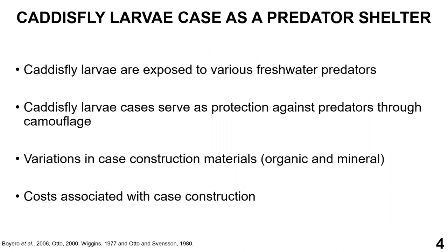These cases have been described as a predator shelter, as they protect the larvae's delicate body from freshwater predators like fish, crayfish, salamanders, dragonfly, and even aquatic birds. Cases also serve as protection through camouflage, because they are built with materials present in the environment, allowing the larvae to match their background. There are variations in case construction materials which can be influenced by predation risk — larvae tend to use more materials, or materials more resistant to crushing, when exposed to predation risk.